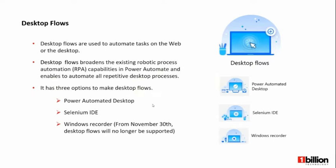Power Automate Desktop gives several capabilities and is widely used for integrating systems or moving data among systems and servers. They have also given the ability to record user actions within Power Automate Desktop. Selenium IDE allows users to record and automate website processes. The Windows Recorder also records your actions on the desktop and has the capability to create automated flows, though some of its features have been moved into Power Automate Desktop.